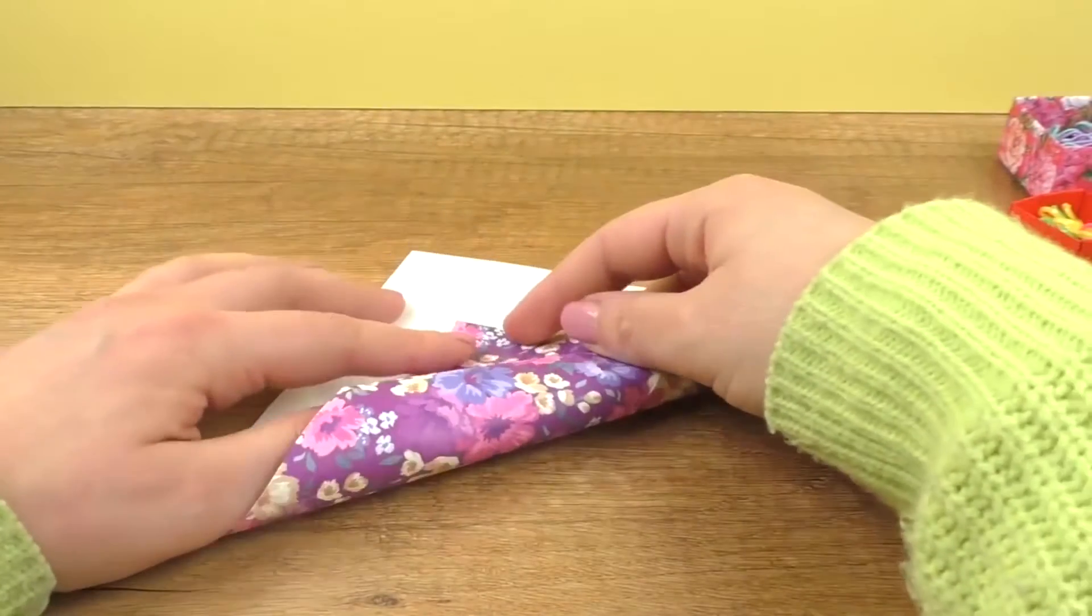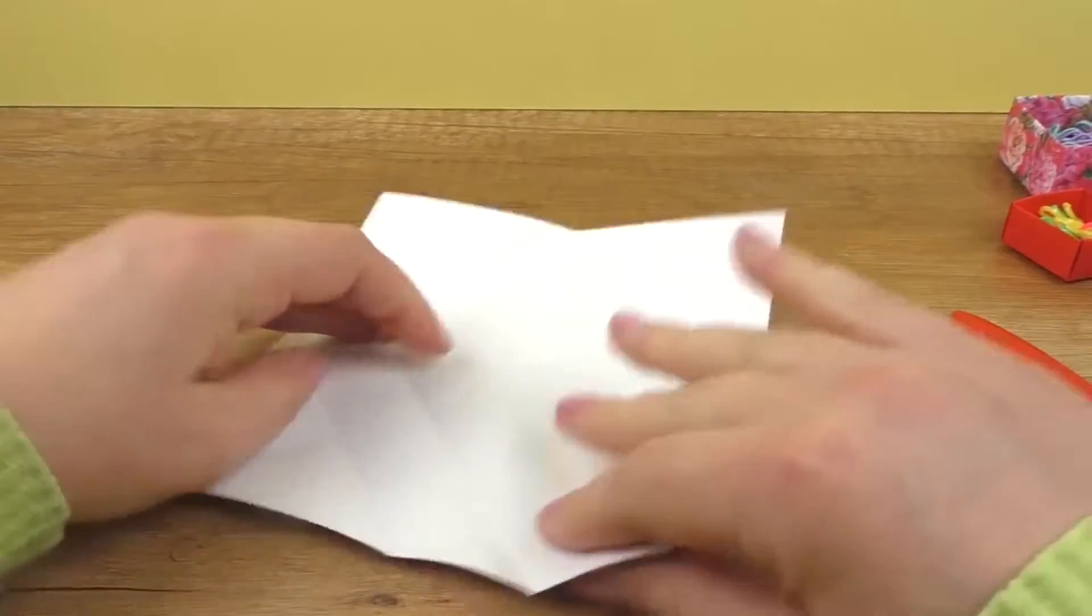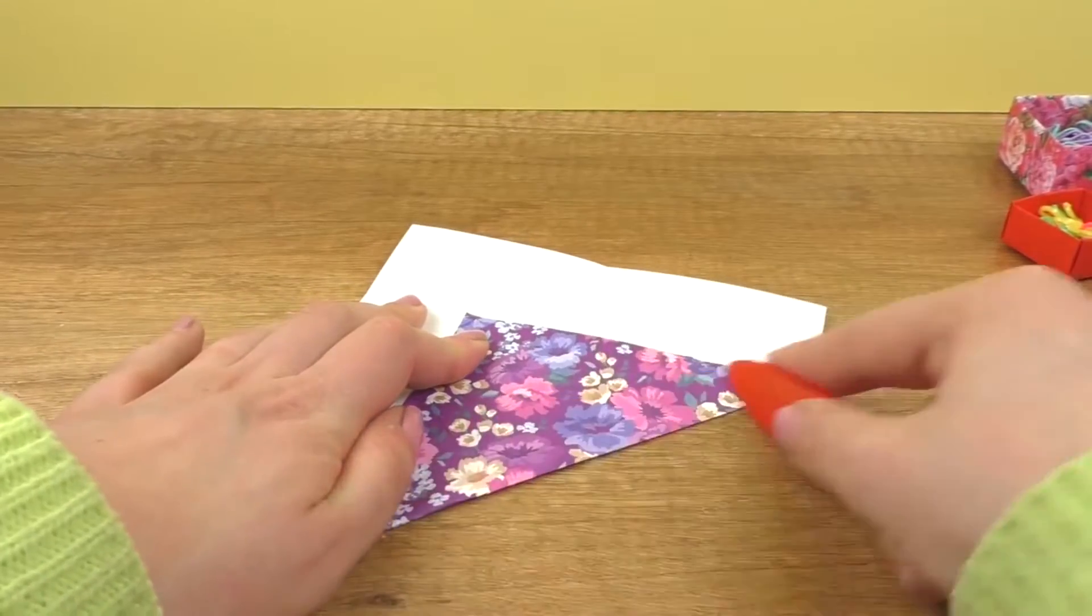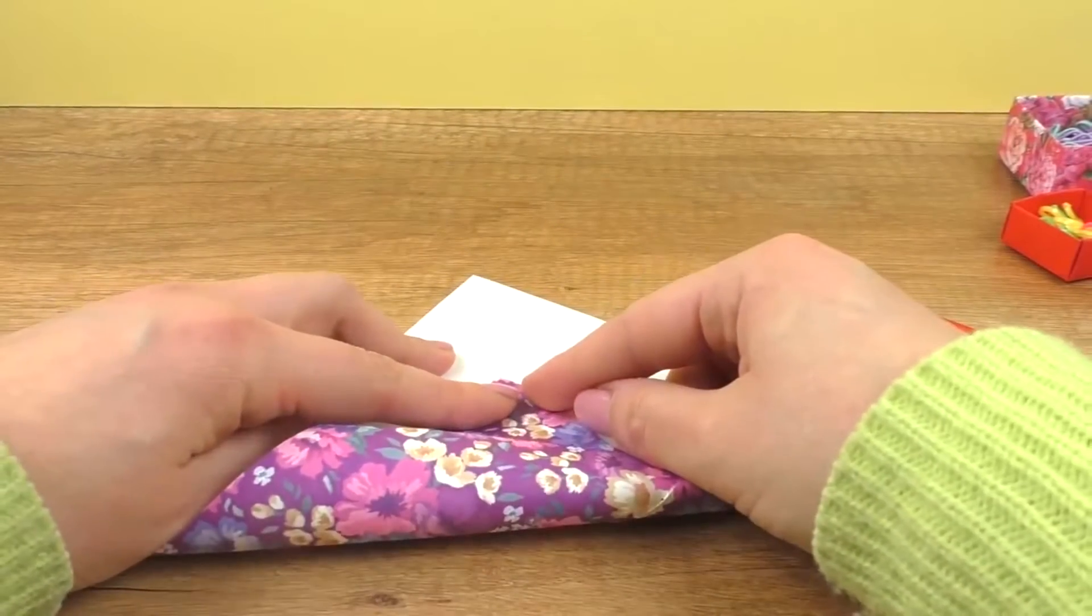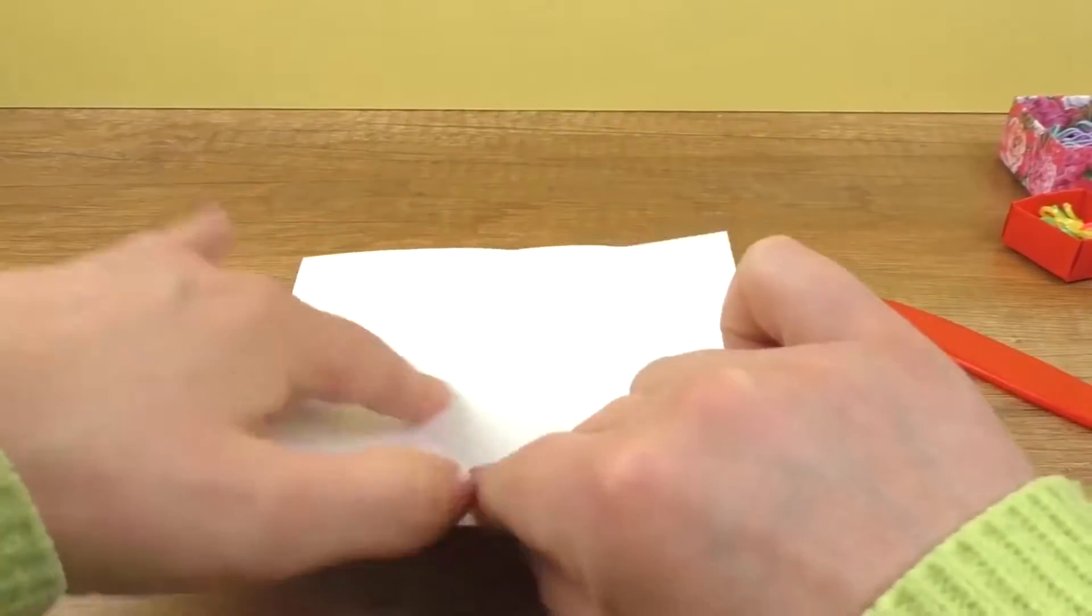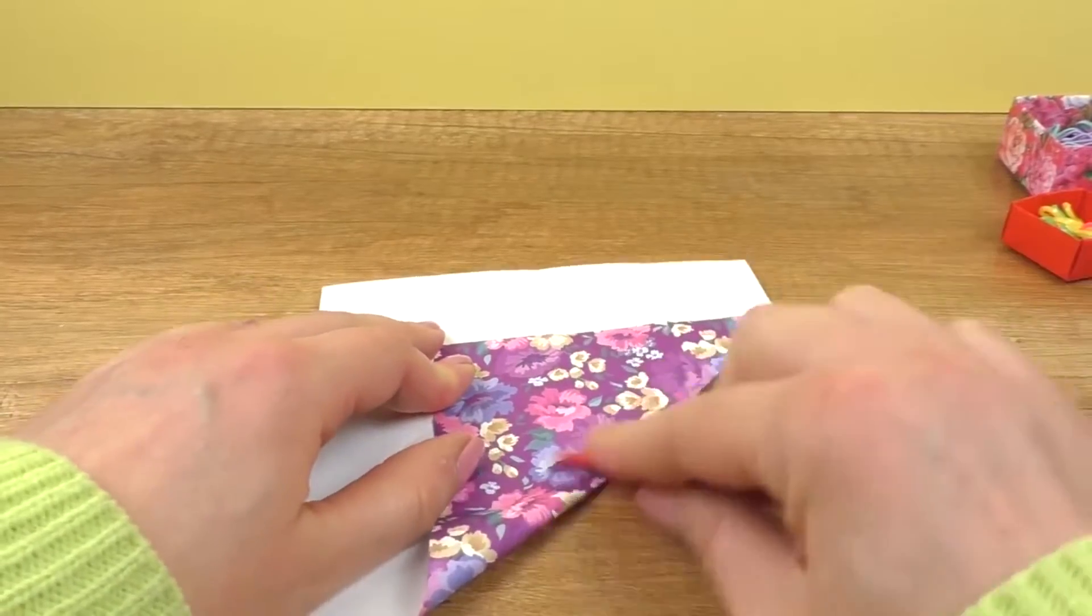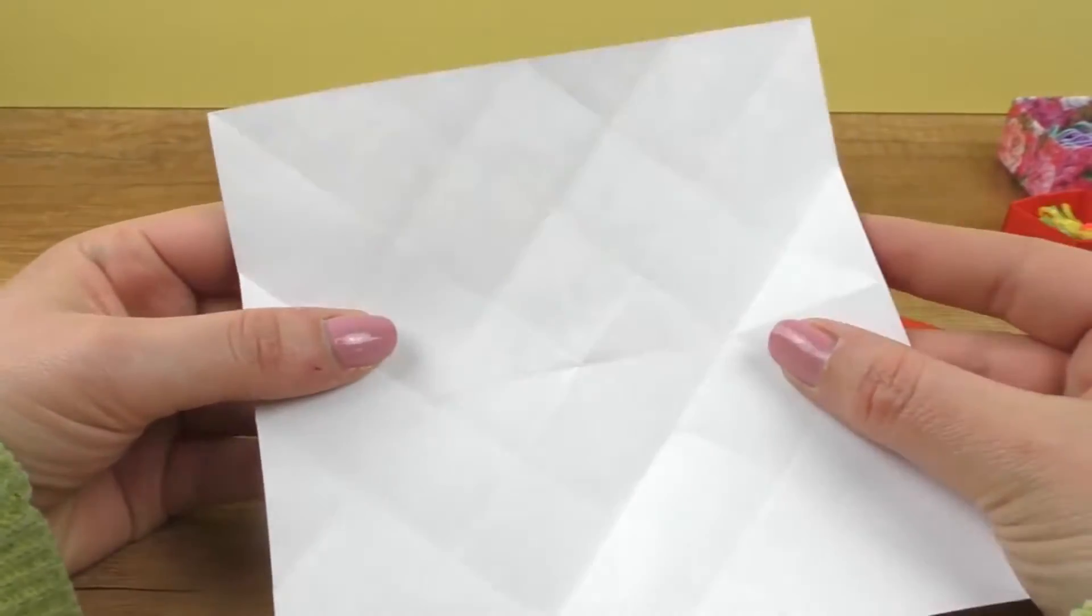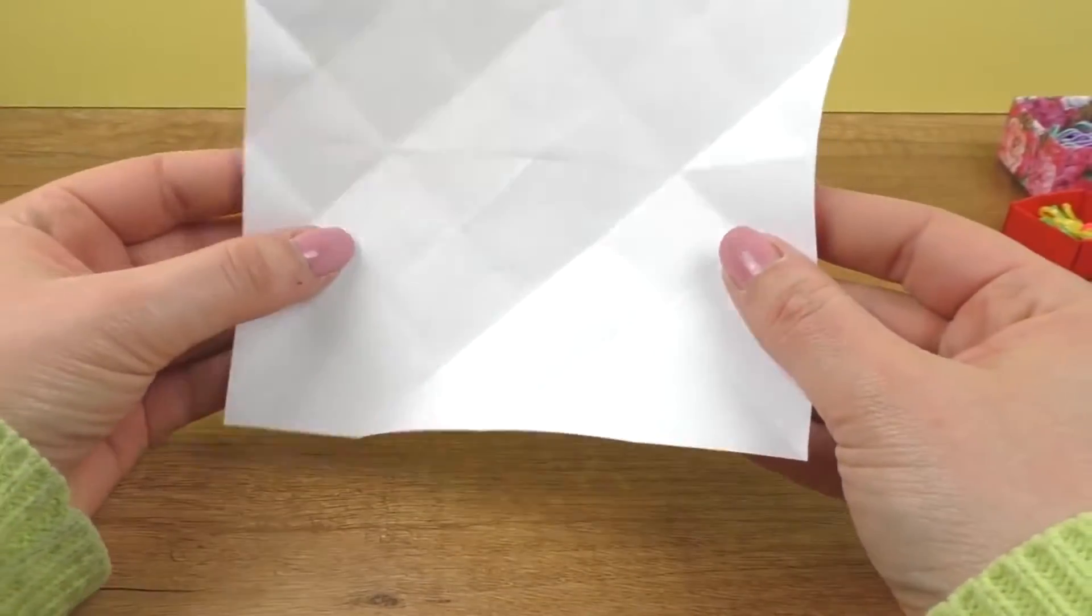And then again, I'm going to fold the corners to my new lines. So turn and do the second one. Fold the corner all the way to that new line I just made. So got to do that for each of the four corners. Open it up. And now we have lots of lines. And as you can see, we've made lots of little squares across the whole paper.